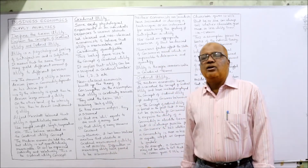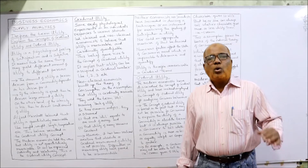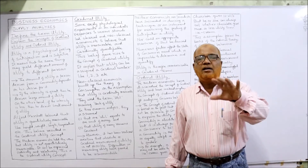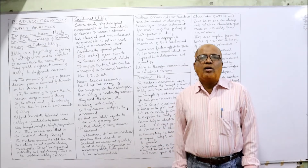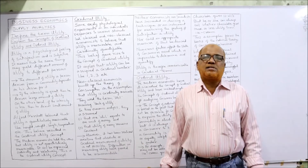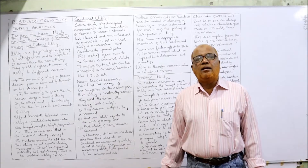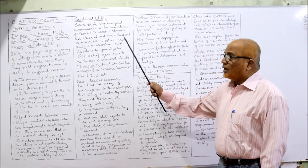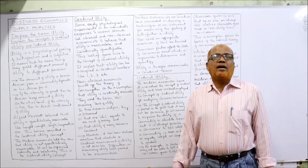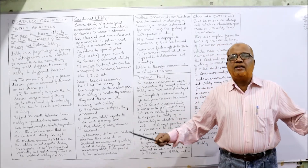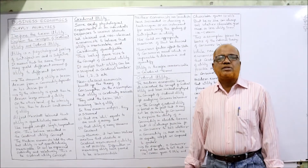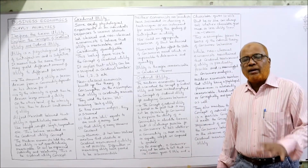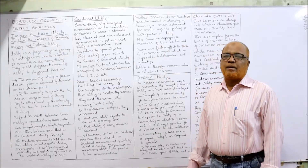Just like by consuming a glass of water I can say I got a lot of satisfaction, but I cannot measure and say I got 100 units of satisfaction — we can feel it but we cannot quantify it. According to the modern economist, utility is not measurable, and this leads to the ordinal utility concept. The old classical economists say it is cardinal utility, whereas modern economists say it is ordinal utility.